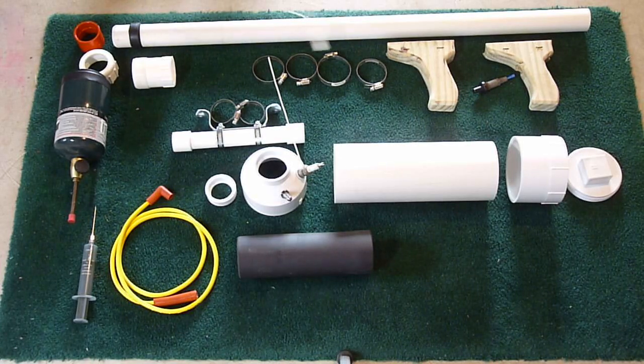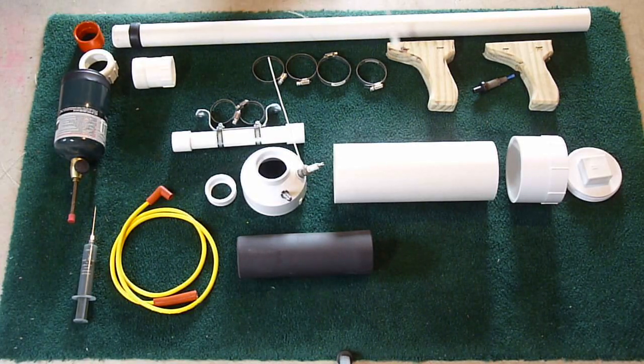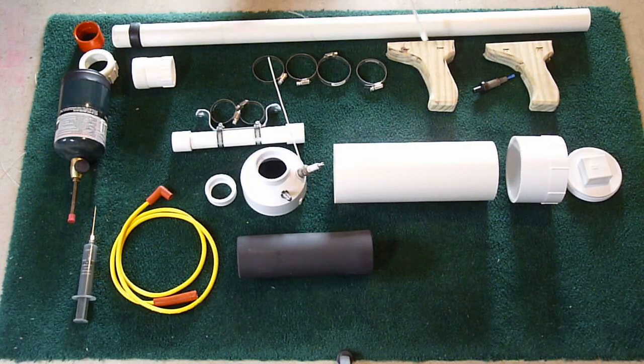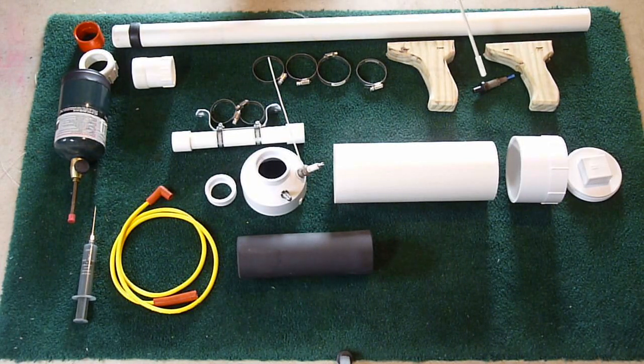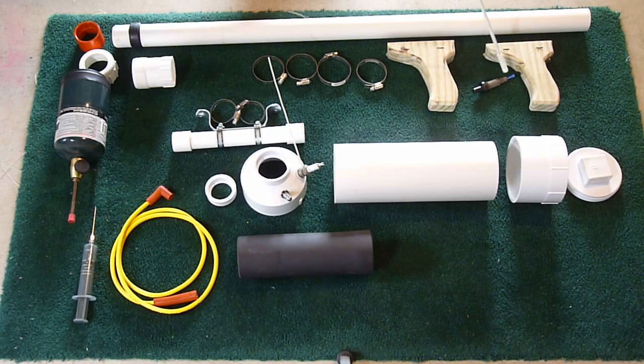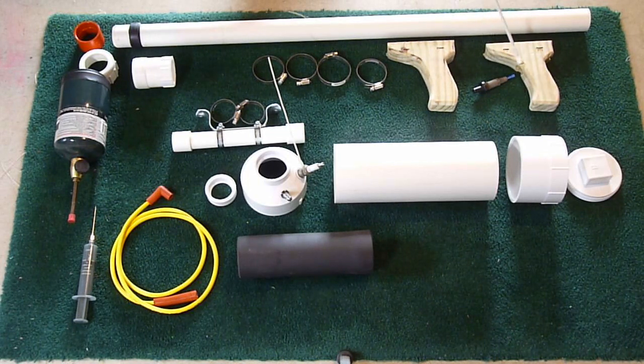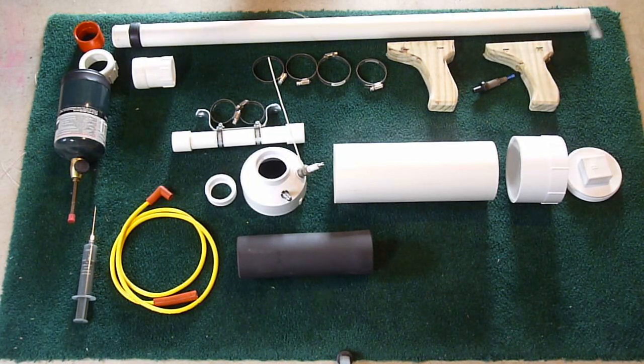Four worm drive clamps to hold these two handles on. That's a grill igniter that goes up into this grip here, and the wires are going to come out back here.